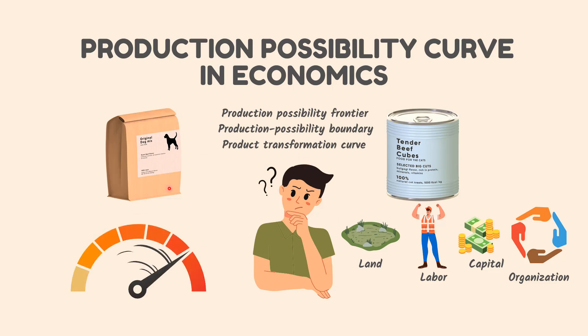The PPF curve shows the maximum specified production level of one commodity that results given the production level of the other. By doing so, it defines productive efficiency in the context of that production set.